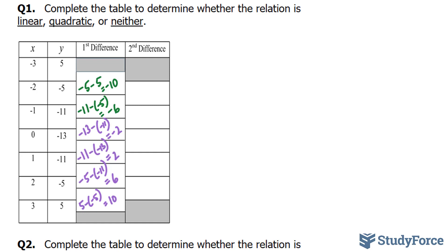Let's go on to find the second differences. This time I'll subtract these two y's. Minus 6 minus negative 10, and that gives us positive 4. Minus 2 minus negative 6, that gives us again positive 4.